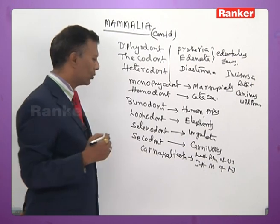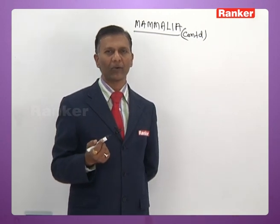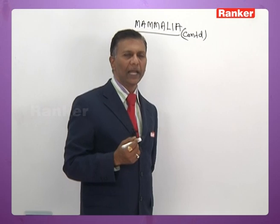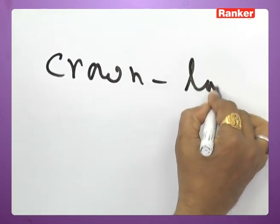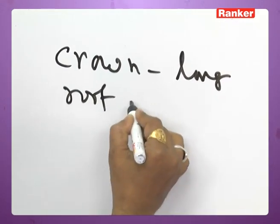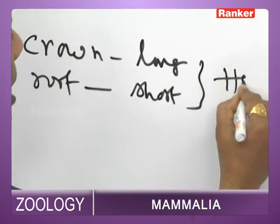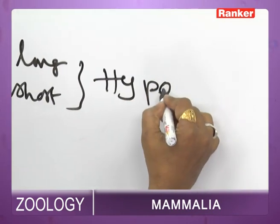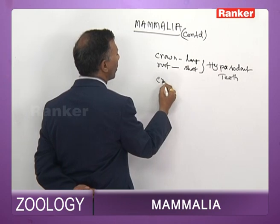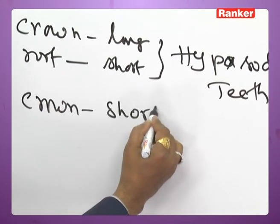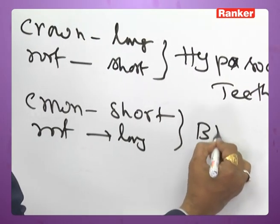In certain mammals, the crown part of the tooth is long and the root is short — such teeth are called hypsodont teeth. If the crown part is short and the root is long, such teeth are called brachyodont teeth.